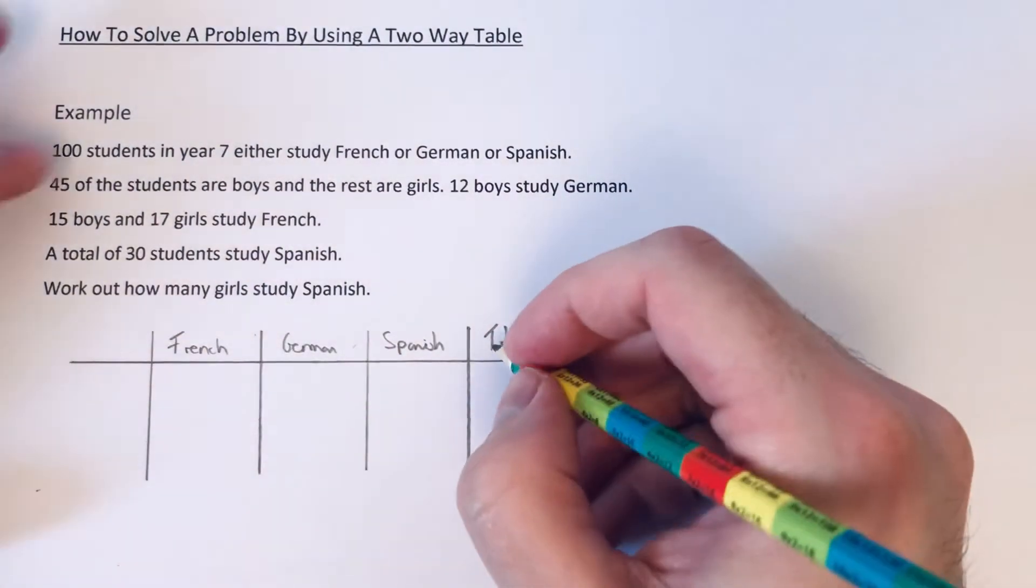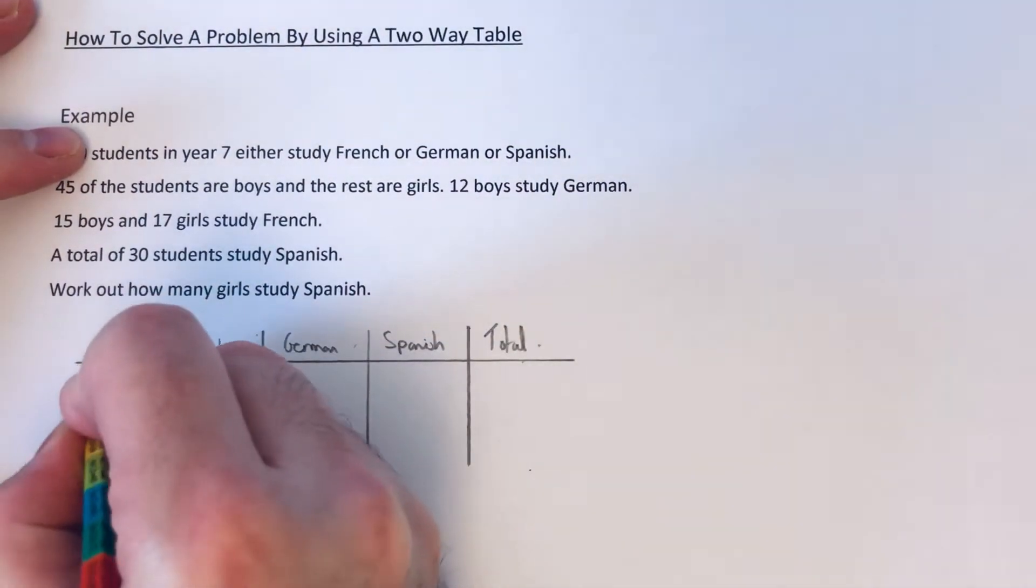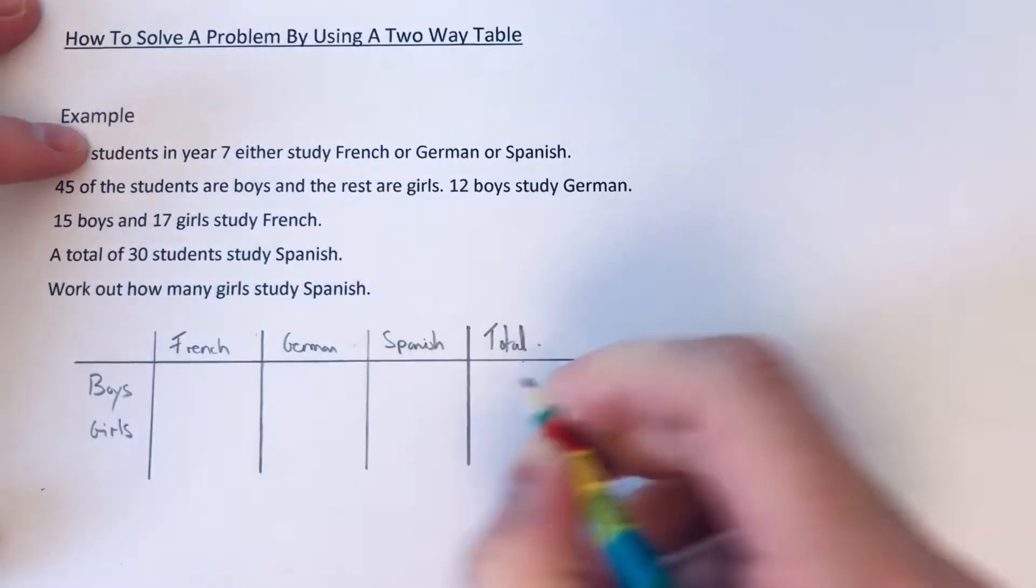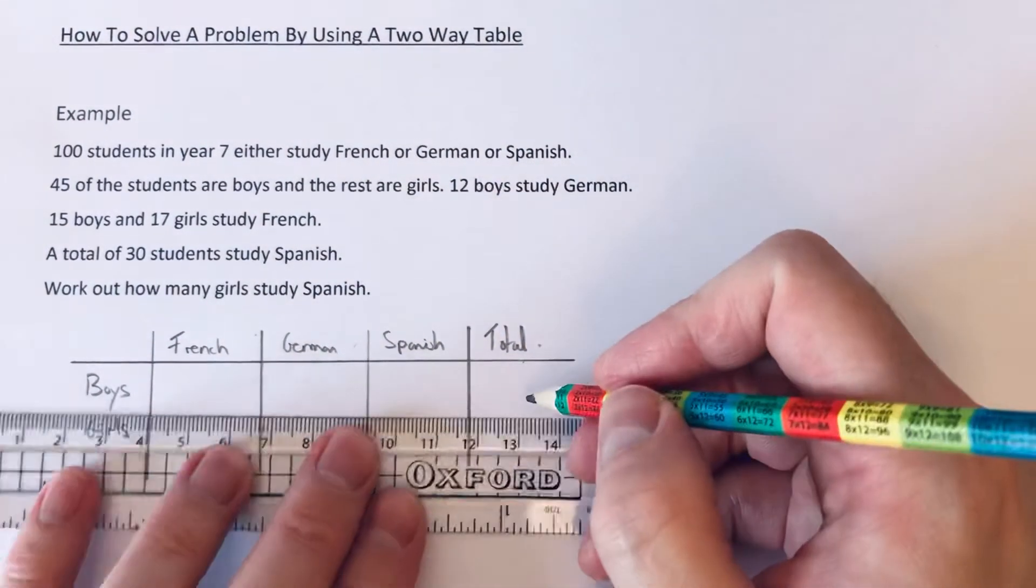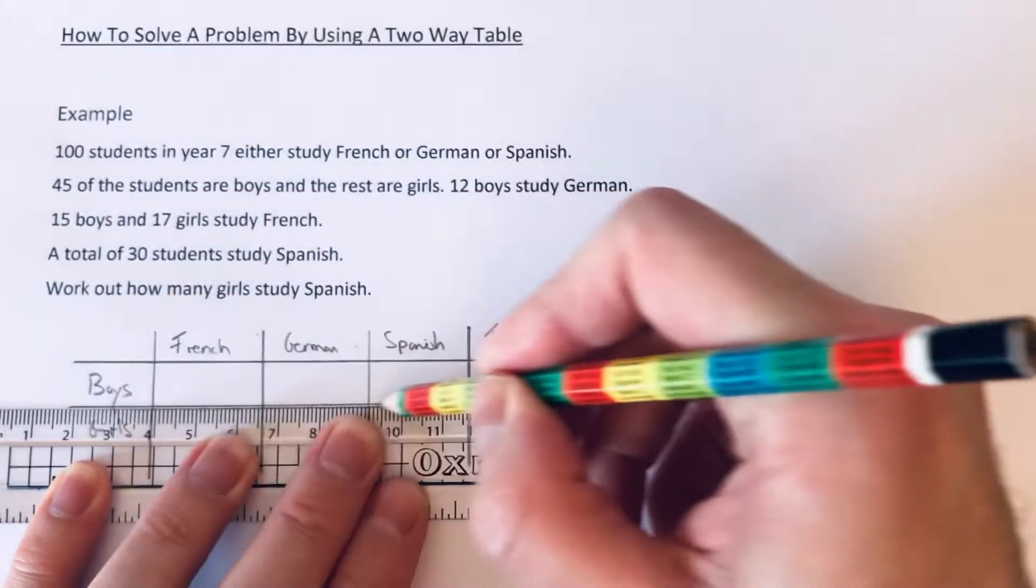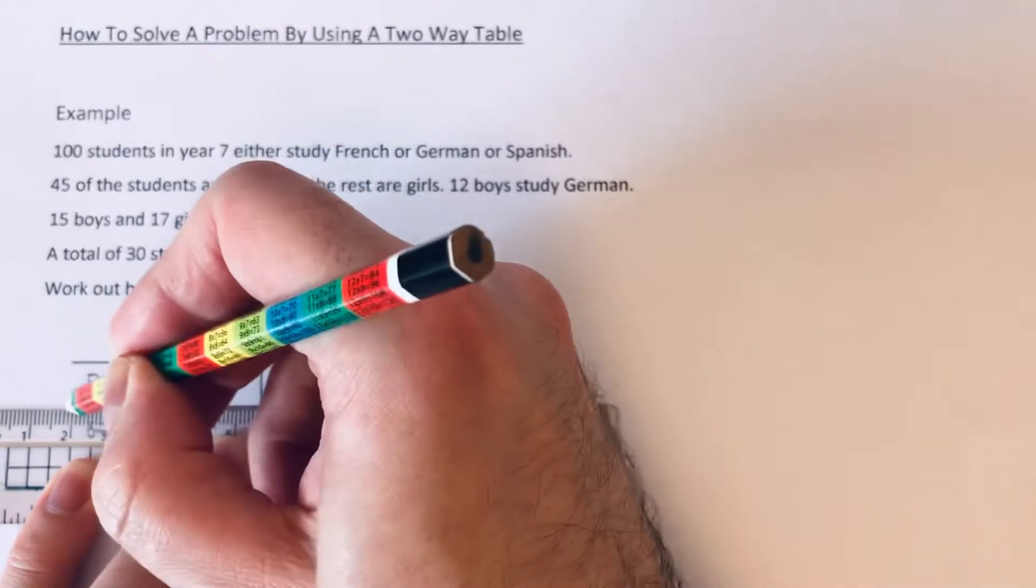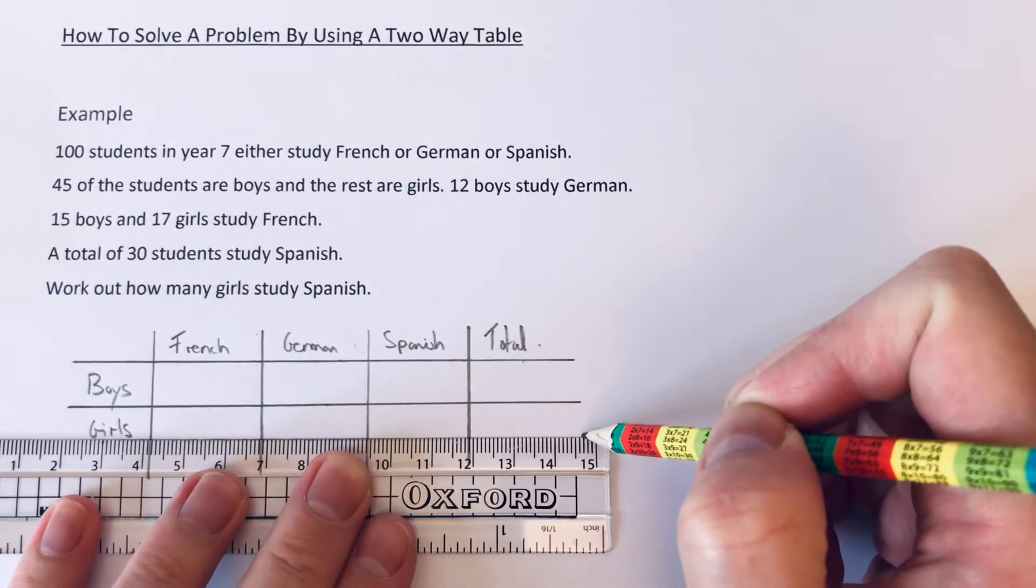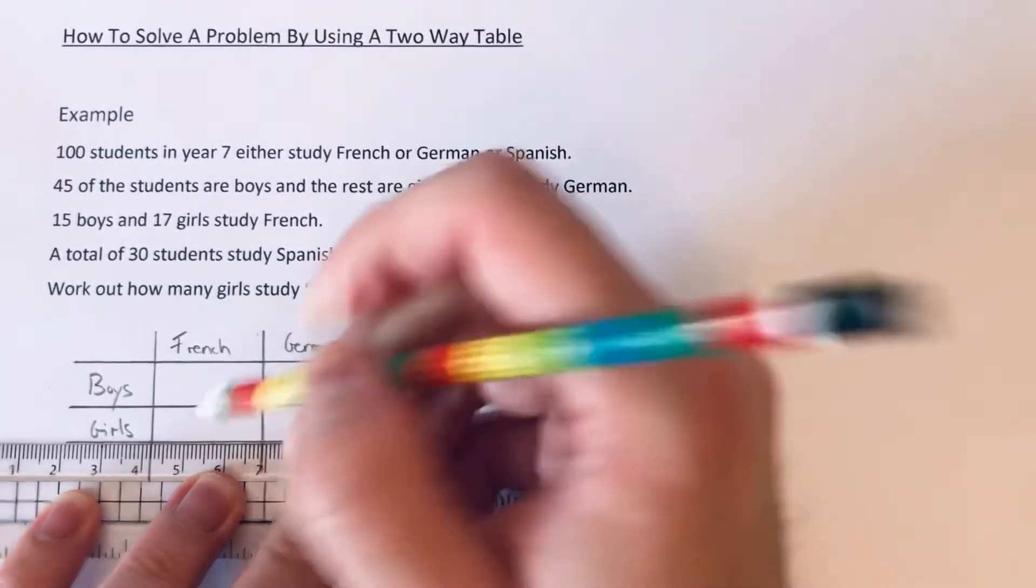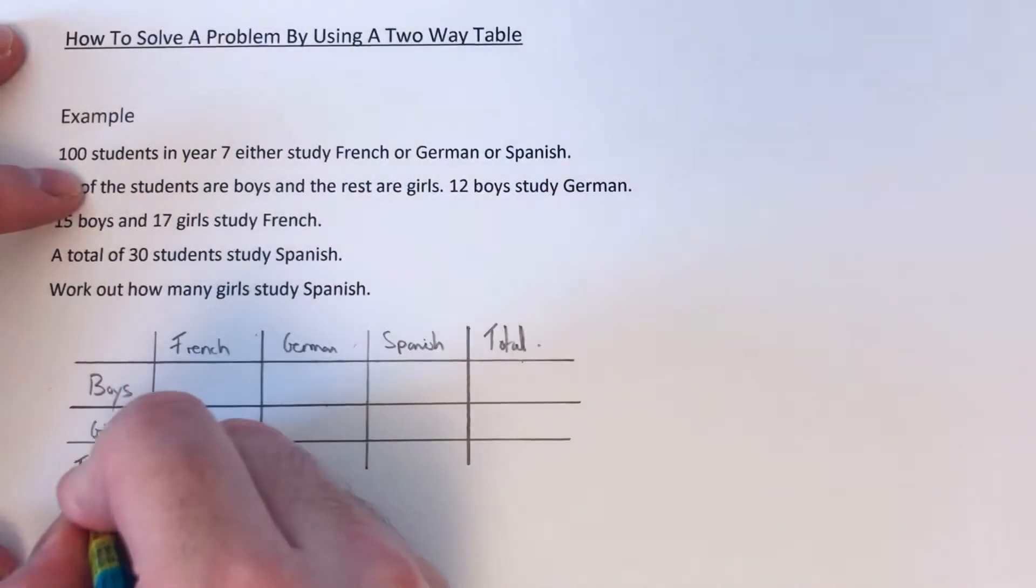And going down the side, we've got boys and girls. You'll find if you've got a problem which involves boys and girls or males and females, the best way to complete would be doing a two-way table. So again, let's just put the total along the bottom.